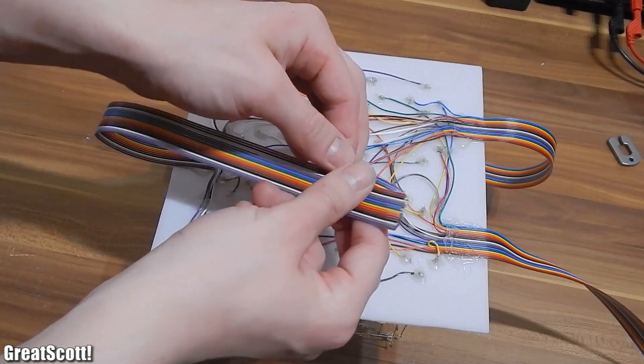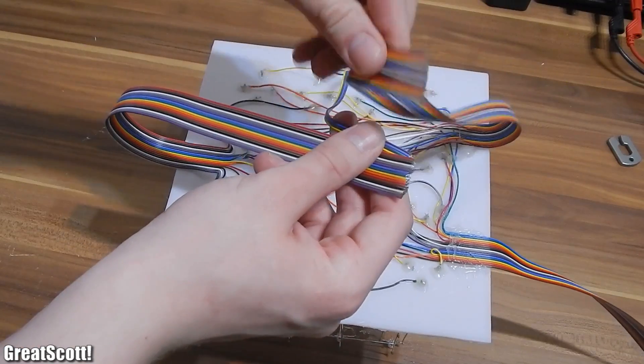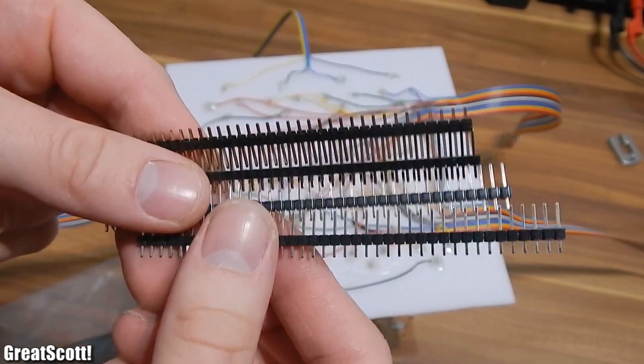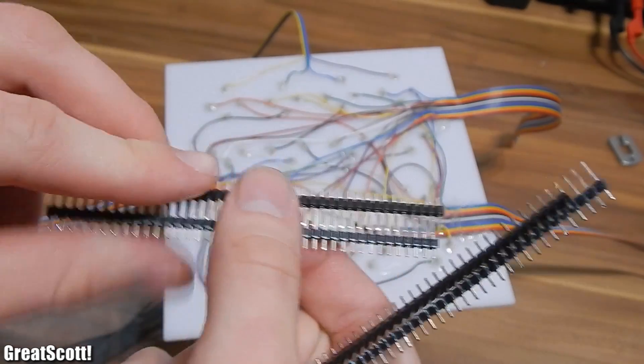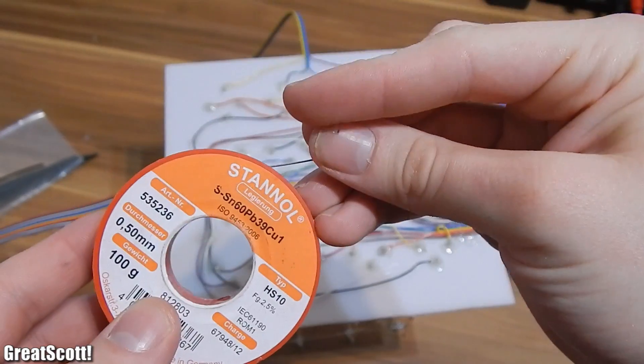Now we need to add male header pins to the ribbon cables for later connecting them to the PCB. Obviously we need 3x16 pins for the cathodes of all colors and 1x4 pins for the anode layers. Also some shrinking tube and solder.